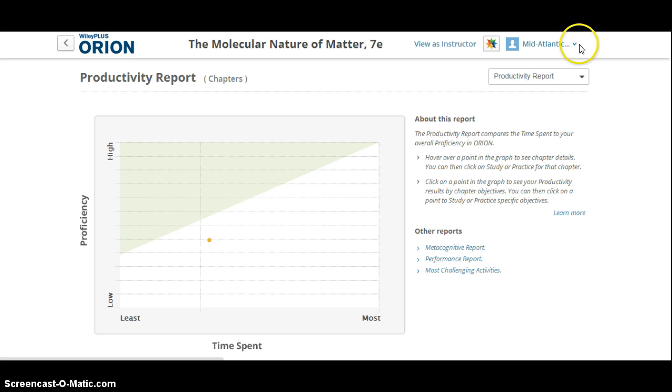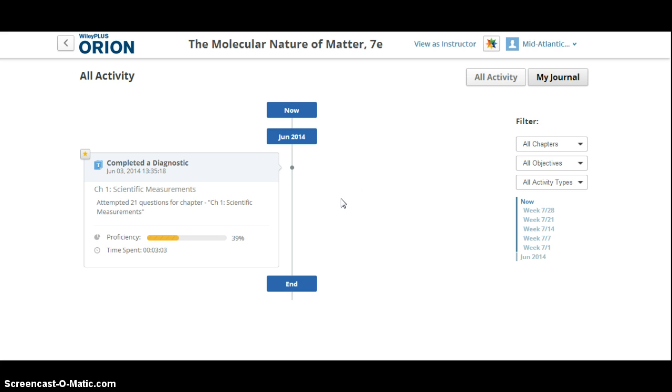Lastly, students can also look at all of the activity that they've completed within Orion in the form of a timeline. This timeline includes milestones that are associated with things that they have completed in Orion. So in this case, a diagnostic was completed by the student. It would also show any questions that students have marked for review, as well as any notes or discussions that the student has started.